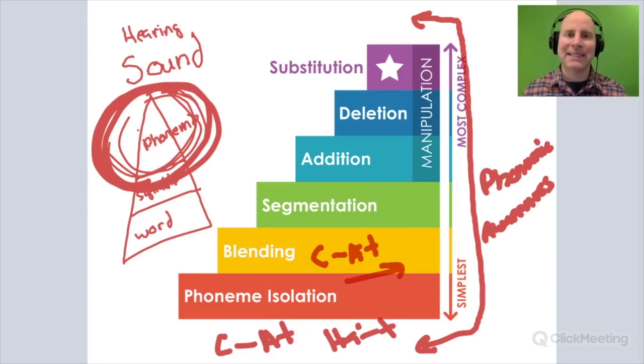When a child is asked to segment, they're asked to identify all the unique sounds they hear. For example, if I say the word ship, what do you hear? Ship is made up of /sh/-/i/-/p/.